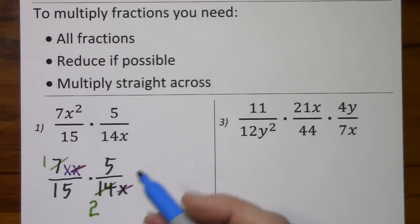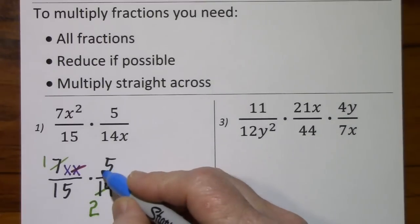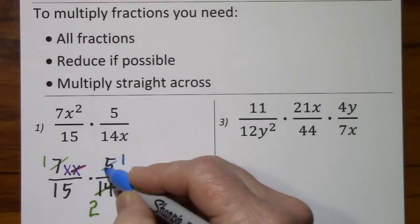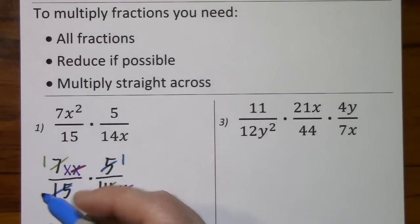The 5 and the 15, 5 is our common factor. 5 divided by 5 is 1, 15 divided by 5 is 3.